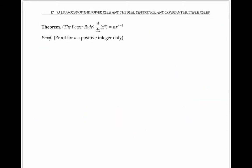The proof of the power rule is more complicated, and I'll only give the proof when n is a positive integer, even though the rule holds for any real number n. So when n is a positive integer, let me write out the limit definition of derivative.